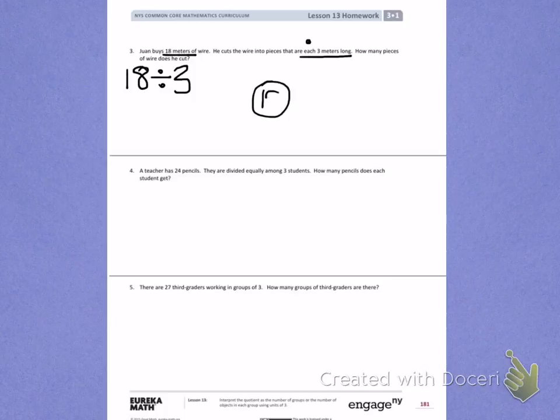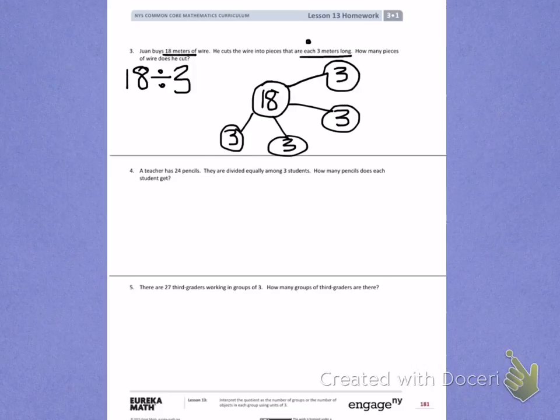To help me solve this problem, I'm going to draw a number bond. I have 18 meters of wire. I'm going to count by 3's until I draw 18 so I know how many groups I have. 3, 6, 9, 12, 15, 18. I have a total of 6 groups.